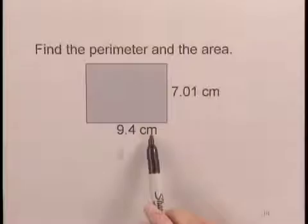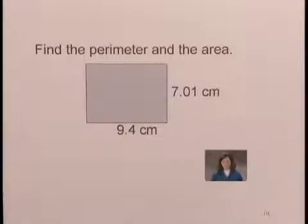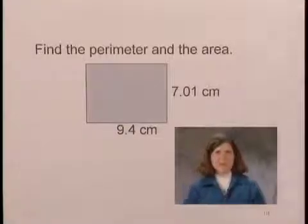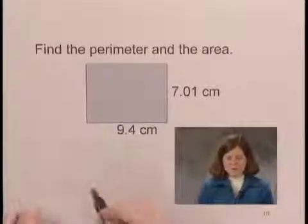We'll find the perimeter and the area of the rectangle with length 9.4 centimeters and width 7.01 centimeters. Let's start by finding the perimeter, and let's begin that process by writing the formula for the perimeter of a rectangle.